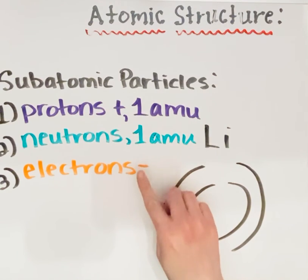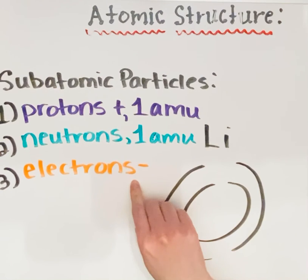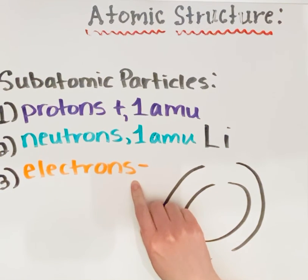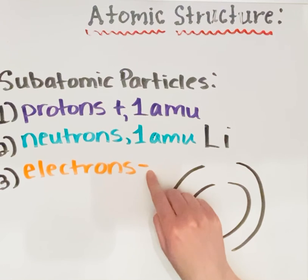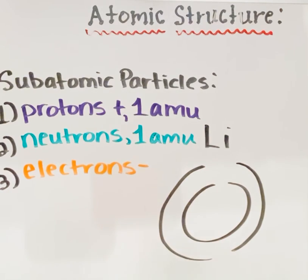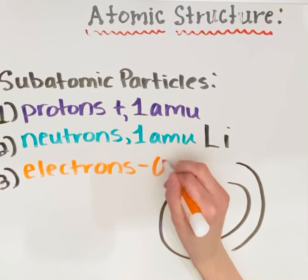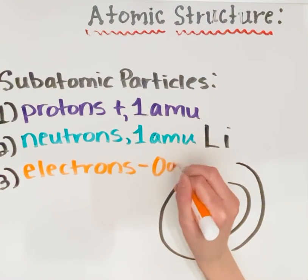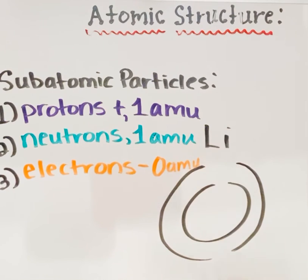While protons and neutrons are found in the nucleus of the atom, electrons are found outside of the nucleus. Electrons have a negative charge, so they're negatively charged particles, where protons are positively charged and neutrons are neutral. Electrons are so small that they're not really measurable, so we say that electrons have a mass of 0 atomic mass units.